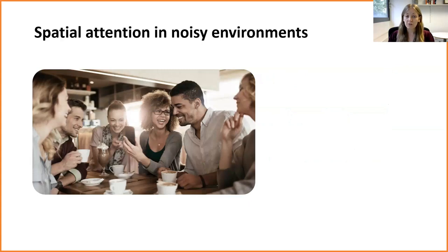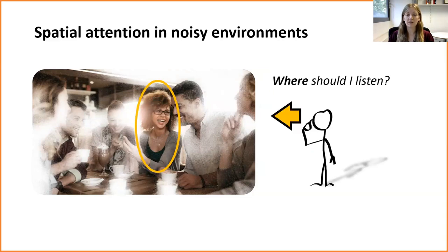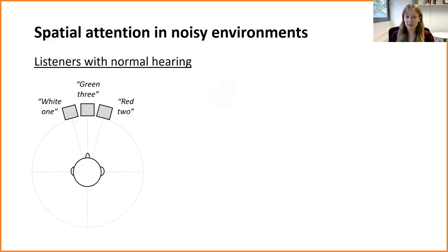If someone with normal hearing is trying to listen to someone speak in a noisy environment, they can direct spatial attention based on where that person is. If you're trying to listen to a person located to your right, you might direct your attention to sounds on your right side and that will help you to focus on that person's voice. In the lab, spatial attention has typically been studied by presenting simple cues that tell people to attend to sounds on the left or right side.